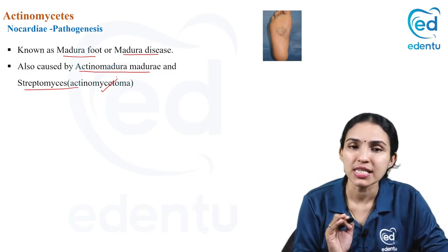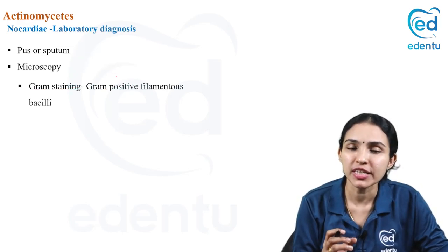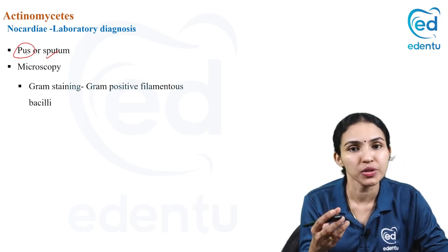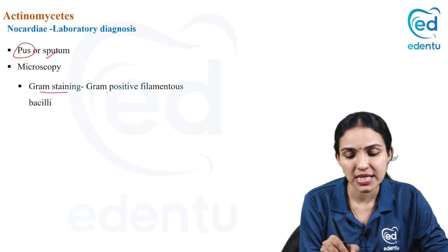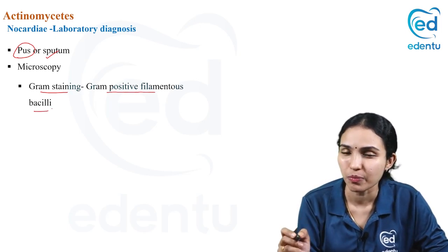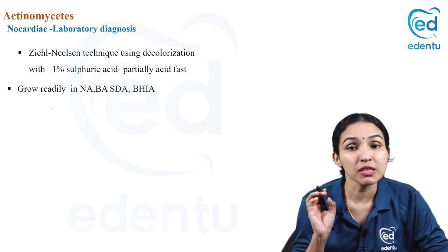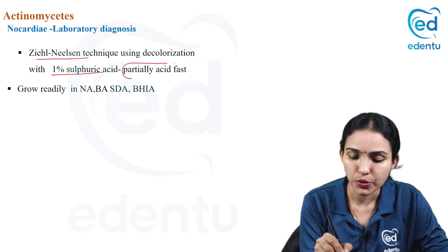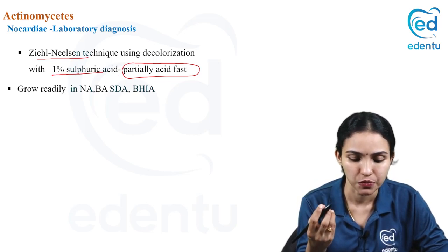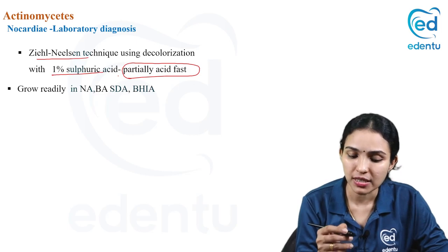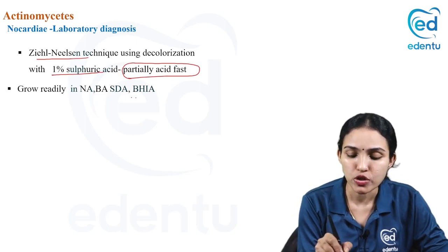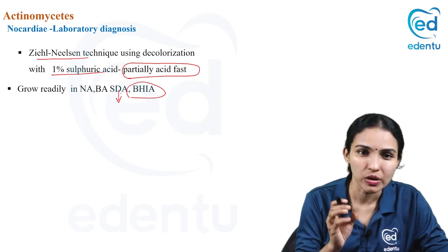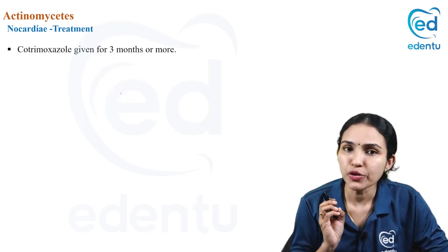For nocardia diagnosis, collect sputum for pulmonary lesions or pus containing granules for mycetoma. On gram stain, gram-positive filamentous bacilli are seen. The most important staining for nocardia is Ziehl-Neelsen staining using 1% sulfuric acid for decolorization — the organism appears pink because it is partially acid-fast. Nocardia grows readily on blood agar, nutrient agar, Sabouraud's dextrose agar, and brain-heart infusion agar, forming chalky white colonies.